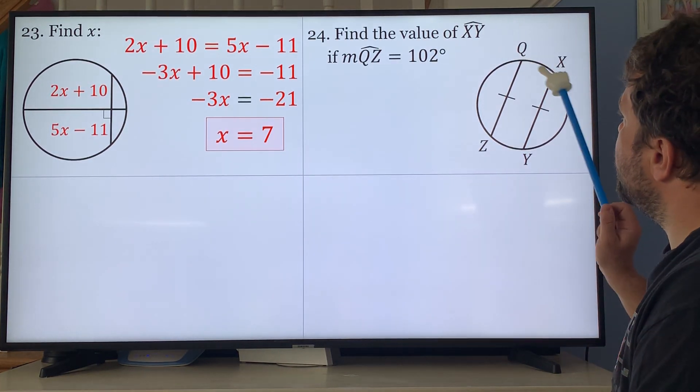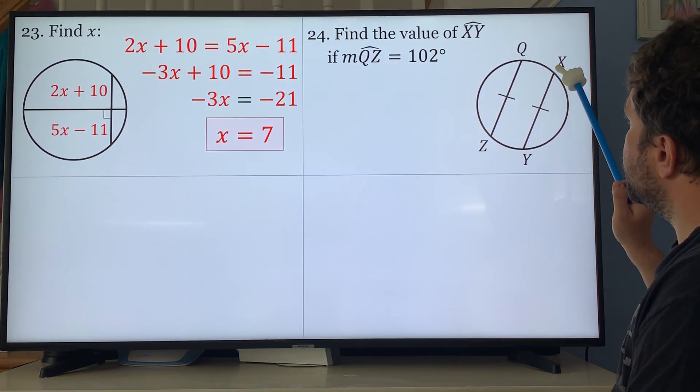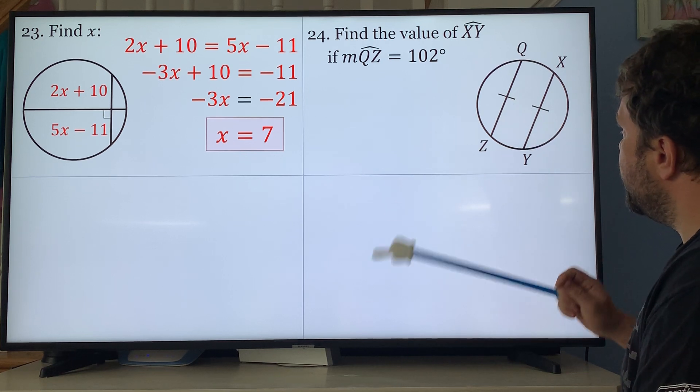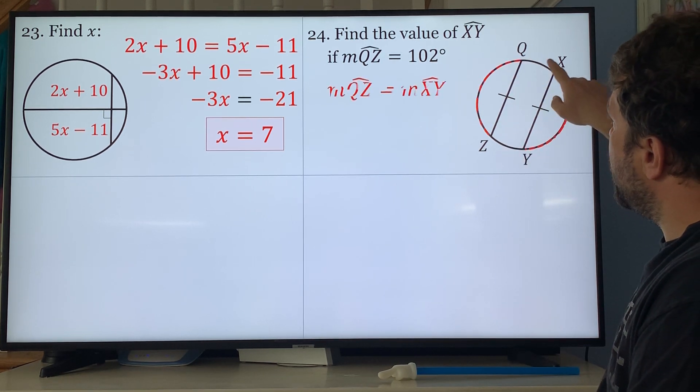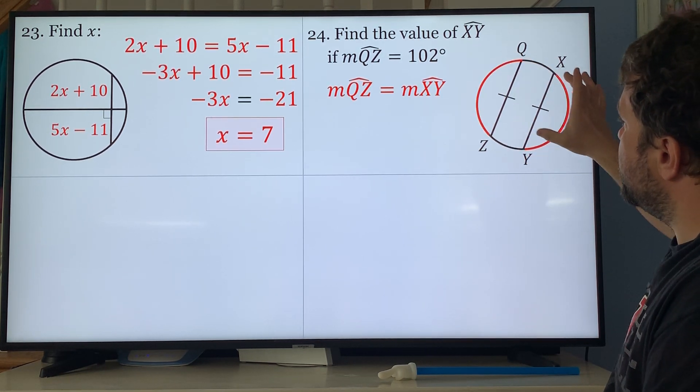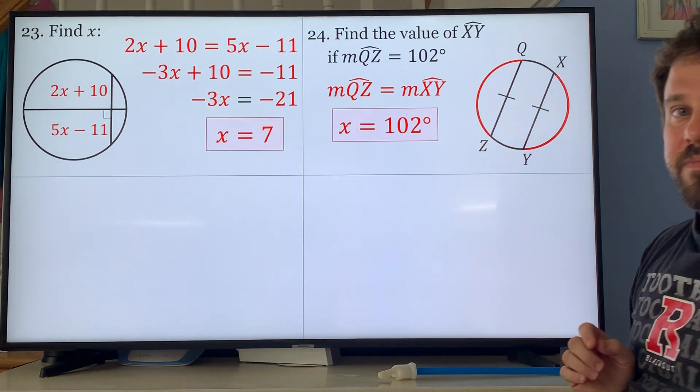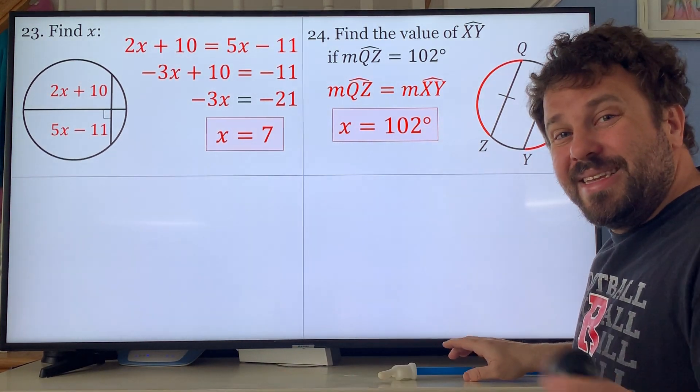Problem 24: find the value of XY. What do we know? Because these two chords are congruent, it means these two arcs are congruent. So if this is 102, XY also equals 102. Not a trick question, just an easy question.